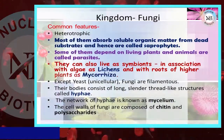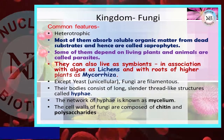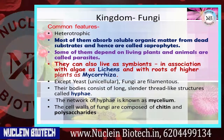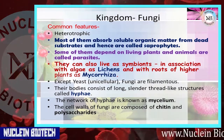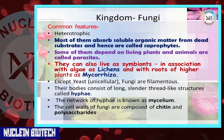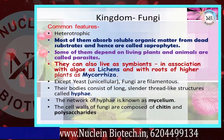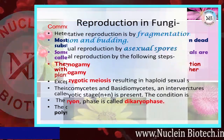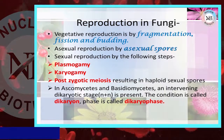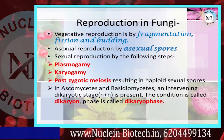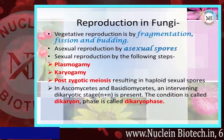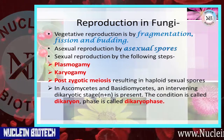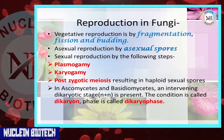Kingdom Fungi common features: fungi are heterotrophic and absorb soluble organic matter. Those feeding from dead substrates are called saprophytes; those depending on living plants and animals are called parasites. They can also live as symbionts with algae as lichens, or with roots of higher plants as mycorrhiza. Except yeast, all are multicellular. Reproduction: vegetative by fragmentation, fission, and budding; asexual by spores; sexual by plasmogamy, karyogamy, and post-zygotic meiosis resulting in haploid sexual spores.